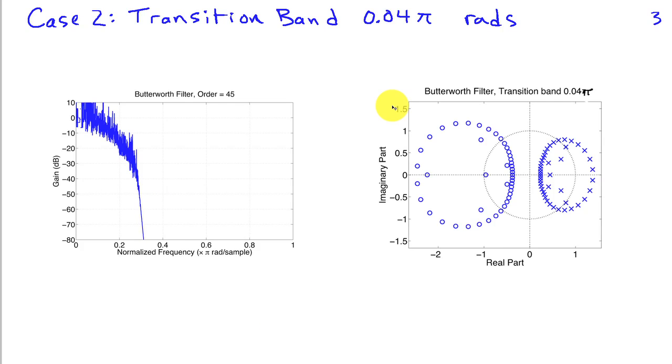Now this is what happens if we shrink the transition band from 0.2π radians, which is what we had in the first case, to 0.04π radians. You can see that your frequency response is extremely irregular and doesn't satisfy the specifications.